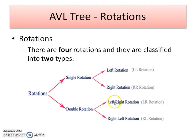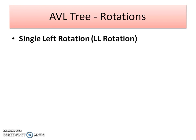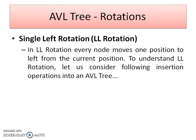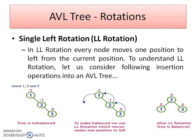Now let's start with the first single rotation, which is the left rotation — that is LL rotation. I would like to explain it with the help of an example. If I insert data in ascending order — that is 1, 2, 3 — as I explained in the previous video, if data is in ascending order the generated tree will be imbalanced. This is a binary search tree but it is an imbalanced tree, because the balance factor for the root node 1 is -2, and -2 is not allowed in an AVL tree.